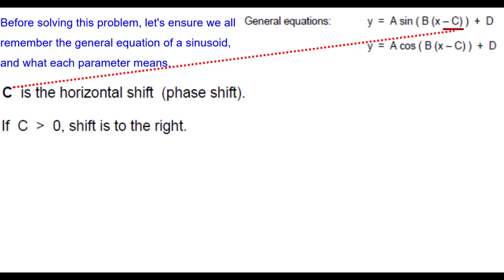B is inversely proportional to the period. The parameter C shifts to the right if we're subtracting a positive number. And if we're subtracting a negative number, then it shifts to the left.